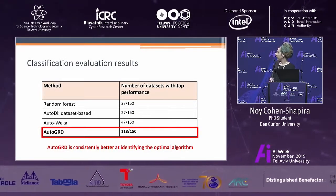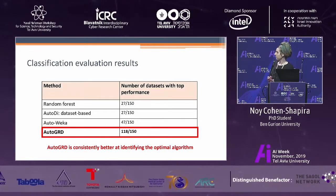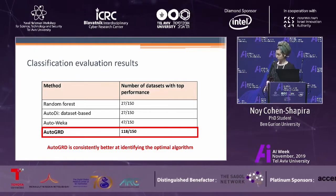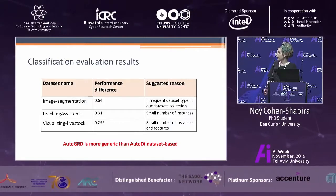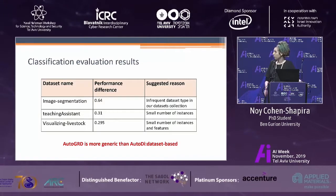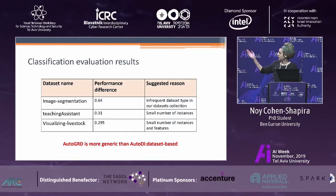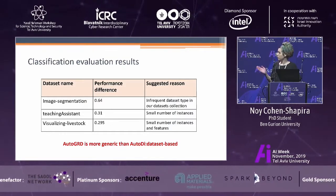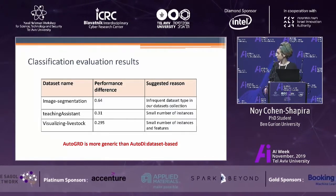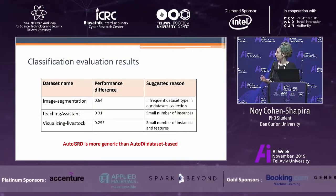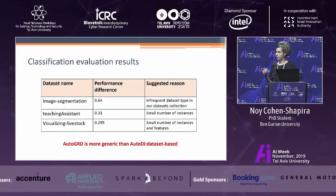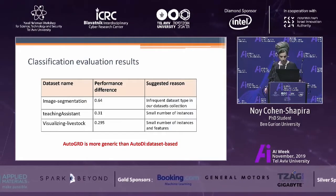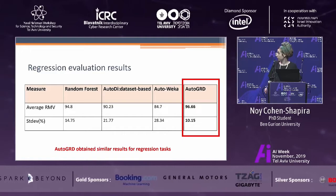Auto-GRD is also consistently better at identifying the optimal algorithm, successfully recommending the top-performing algorithm in 118 out of 150 cases. Comparing Auto-GRD and AutoD, the two meta-learning approaches, the table shows three datasets where they had the largest performance differences — in all cases Auto-GRD outperformed AutoD with significant margins. This led us to conclude that our approach is more appropriate for cases where the dataset is infrequently used in the training set or has special characteristics that make commonly used algorithms ineffective. Similar results were also obtained for the regression datasets.